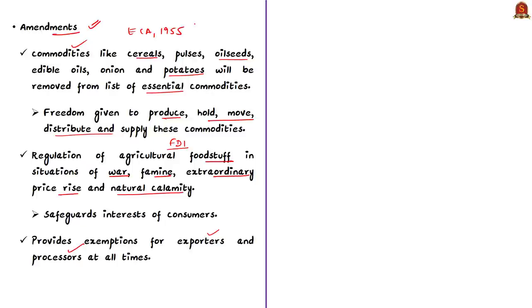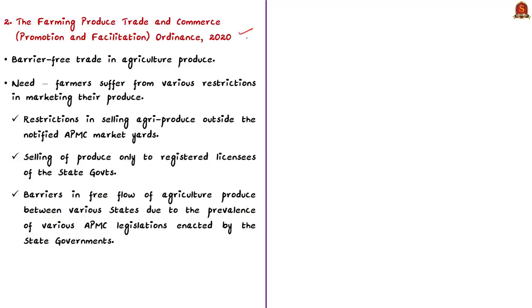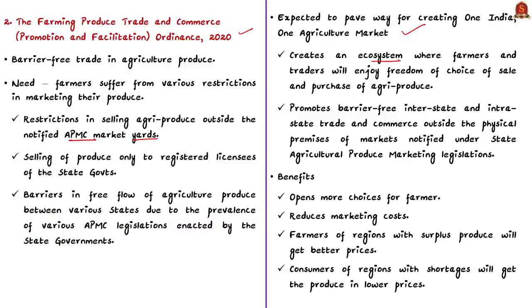The cabinet also approved the Farming Produce Trade and Commerce Ordinance 2020 for barrier-free trade in agricultural produce. Farmers currently suffer from various restrictions in marketing their produce outside notified APMC market yards. The ordinance is expected to pave the way for creating one India one agriculture market. It will create an ecosystem where farmers and traders enjoy freedom of choice in sale and purchase of agri-produce and can promote barrier-free interstate trade outside the physical premises of APMC markets.